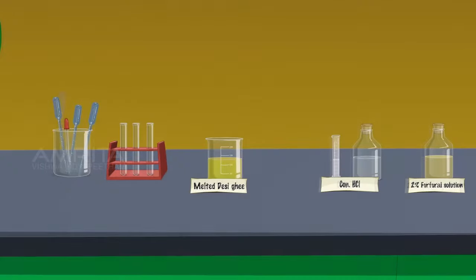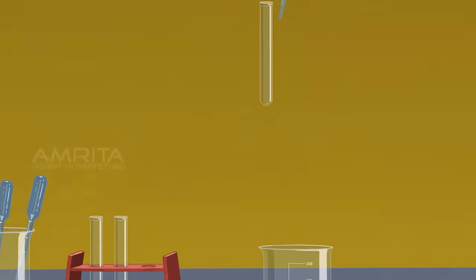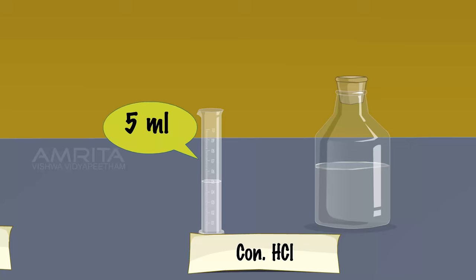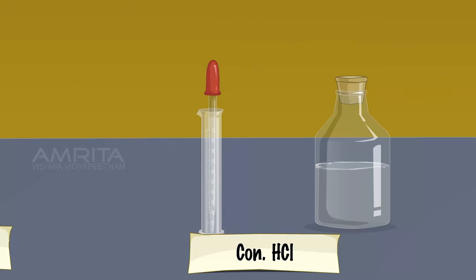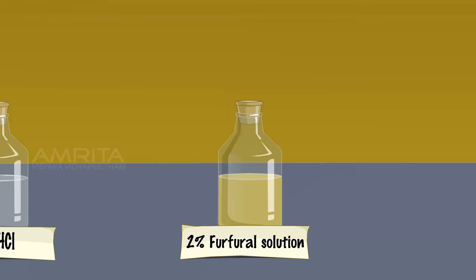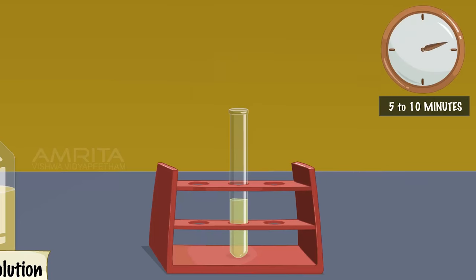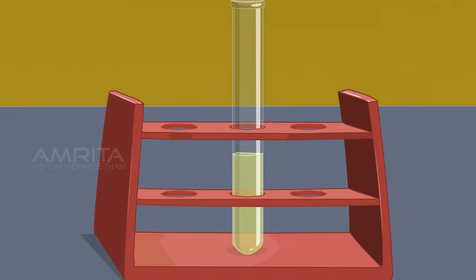Baudouin Test. Desi Ghee. Using a dropper, take a small quantity of melted desi ghee in a test tube. Using another dropper, add 5 ml concentrated hydrochloric acid into the test tube. Then add about 3 drops of 2% furfural solution into the test tube. Keep it aside for 5-10 minutes. There will be no characteristic change, indicating that pure desi ghee does not contain sesame oil.